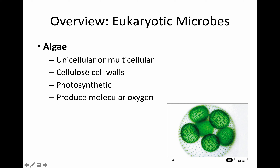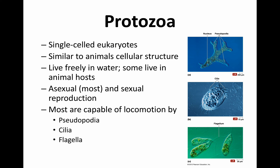Eukaryotic microbes such as algae are unicellular or multicellular, with cellulose in their cell walls. They are photosynthetic — fixing carbon dioxide using light energy from sunlight — and produce oxygen as a byproduct. Algae are considered autotrophs and primary producers. Protozoa, such as amoeba and euglena, are single-celled eukaryotes similar to animal cells in structure. They usually live freely in water or in animal hosts, reproduce sexually or asexually, and are typically motile through pseudopodia, cilia, or a flagellum.